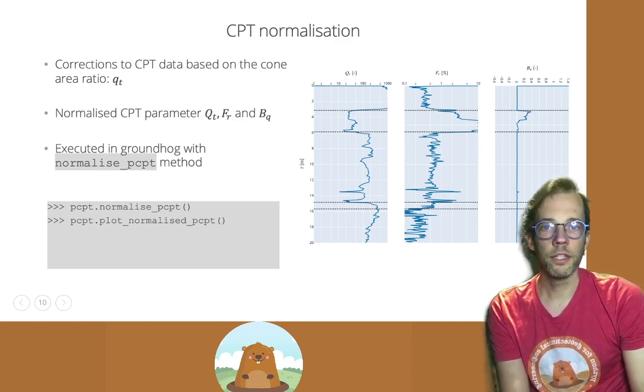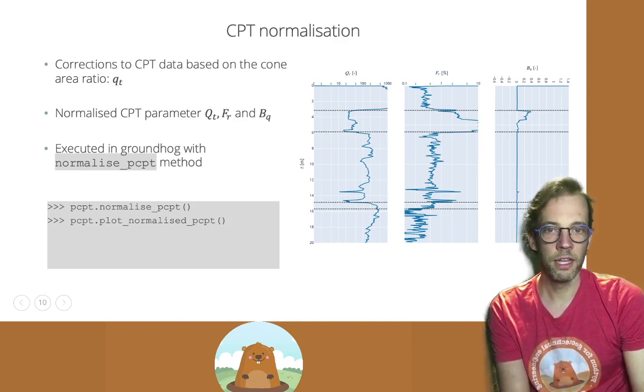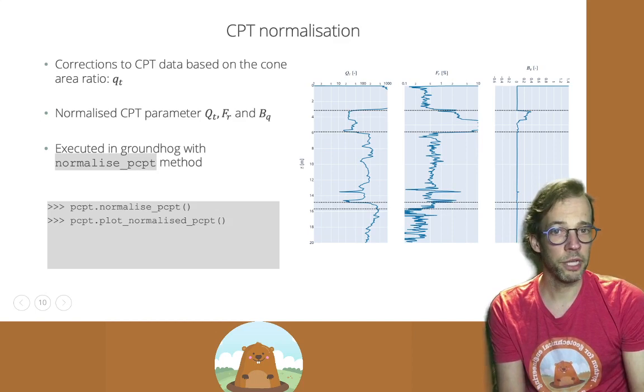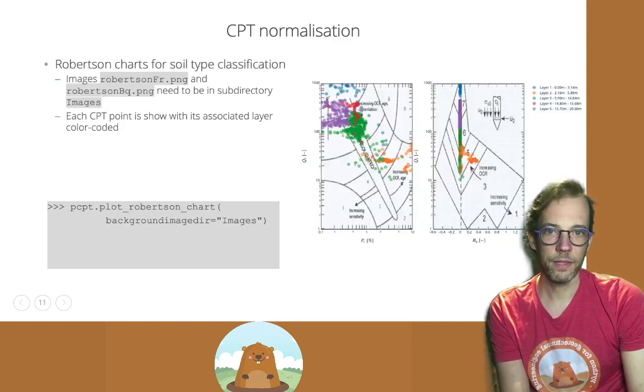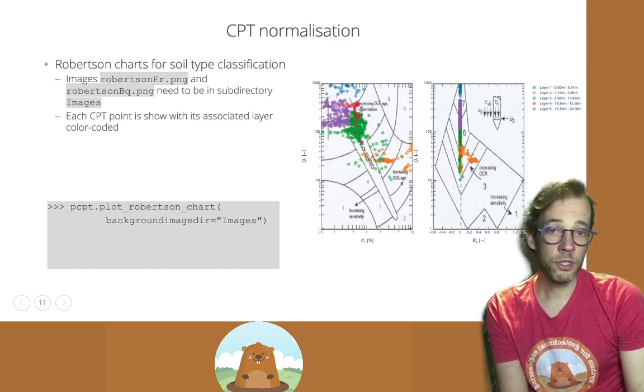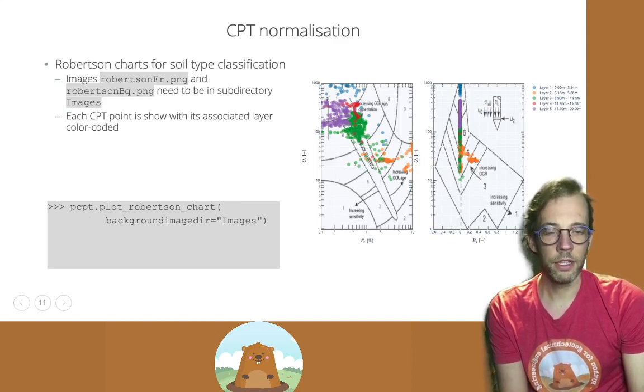And once you have the normalized properties, it's just a simple step to plot them. Because with plot normalized CPT, you will immediately display profiles of QT, FR and BQ versus depth. And generally that will give you even a better resolution on your layering.